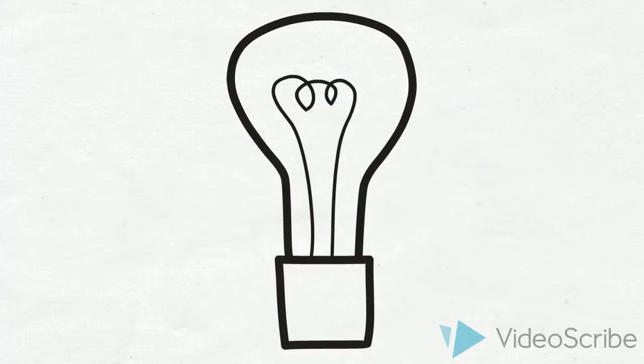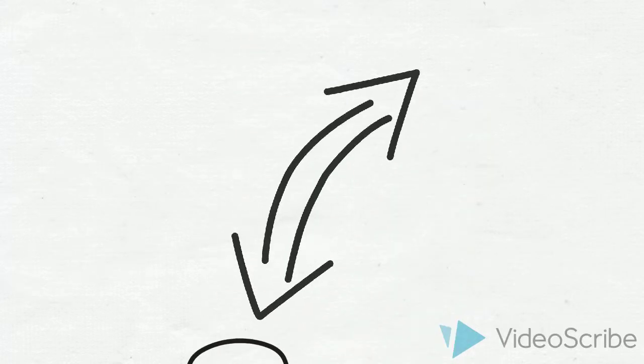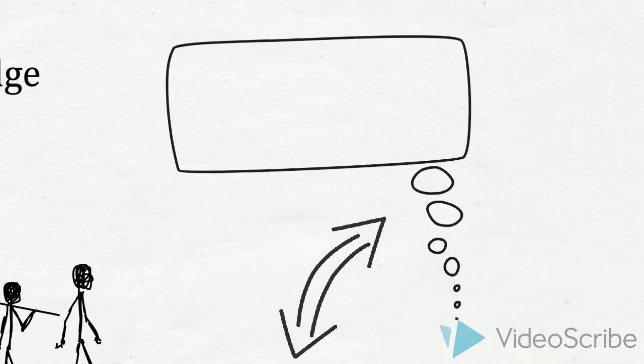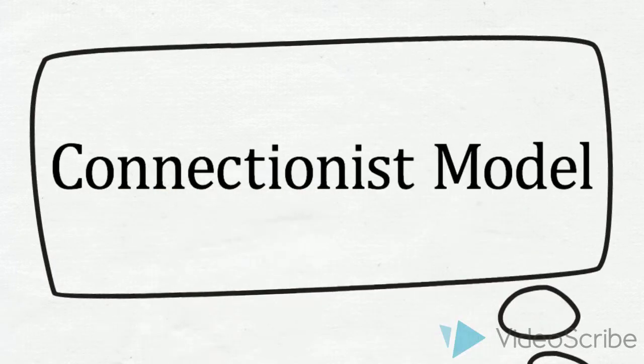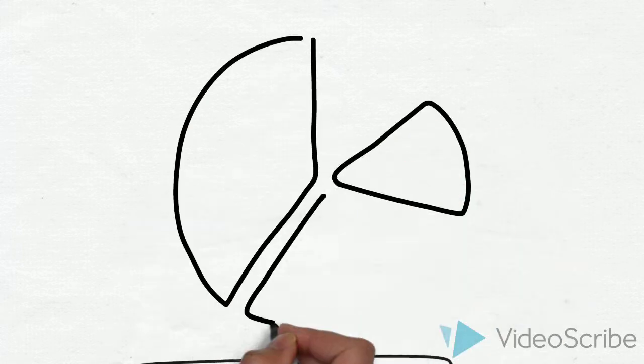As a result, schema theory is viewed as a connectionist model, or pre-existing mental structures with organized categories which allow a person to make sense of new information.